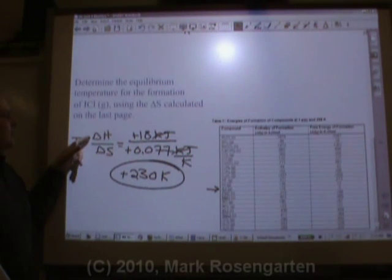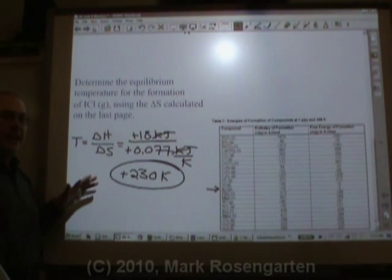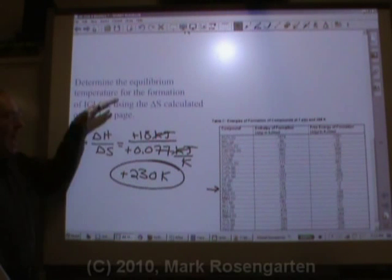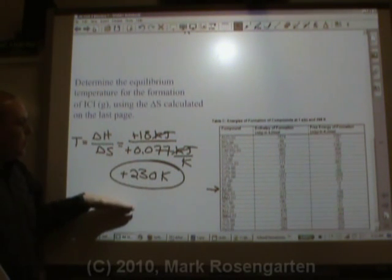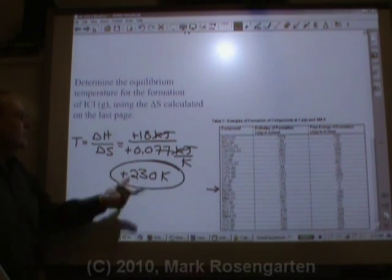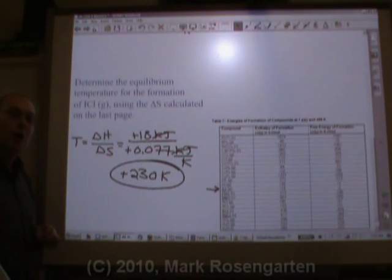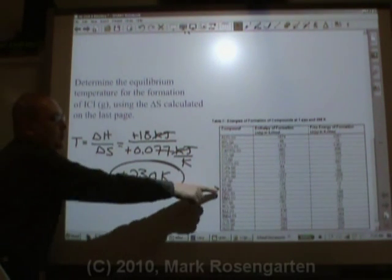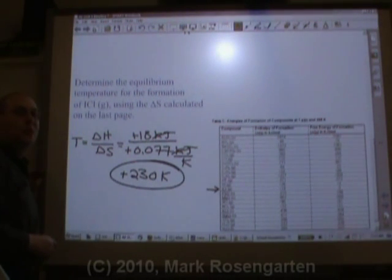Since delta H is unfavored and delta S is favored, this reaction will be spontaneous at any temperature from 230 degrees on up. Below 230 degrees, this reaction will not be spontaneous because the delta S factor will be too small. This is the temperature at which this reaction reaches equilibrium. And that's all you have to do. First, find the delta S, and then you can find the equilibrium temperature.